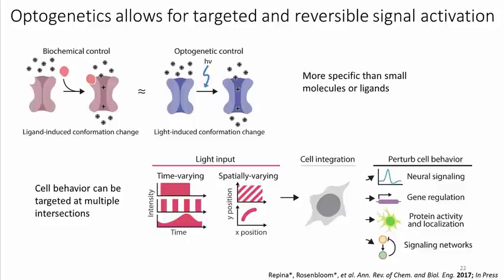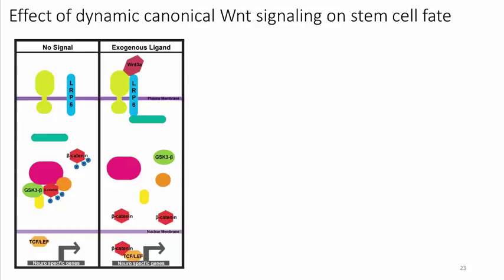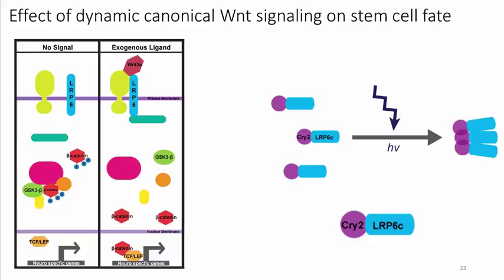I focused on the classic neuronal differentiation pathway in adult neural stem cells: canonical Wnt signaling. In the absence of Wnt3A ligand, beta-catenin, which is constitutively produced, is continuously marked for degradation through phosphorylation by the destruction complex consisting of Axin, APC, GSK3-beta, and CK1-alpha. When Wnt3A binds to Frizzled, LRP6 is recruited, a downstream signaling cascade is initiated, the destruction complex is inhibited, and the stabilized beta-catenin population translocates to the nucleus to act as a transcriptional co-activator, driving expression of neuro-specific genes.